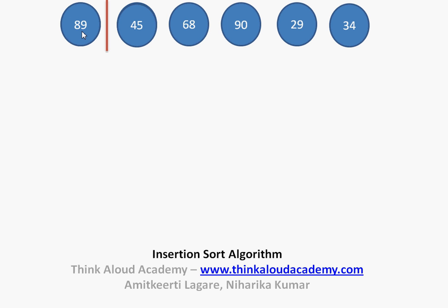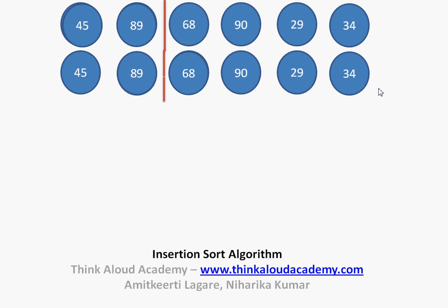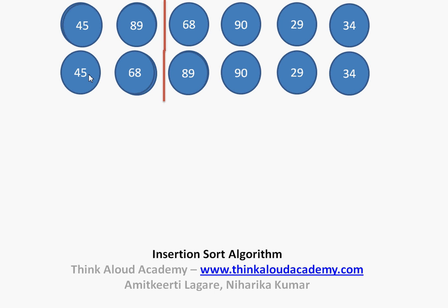Currently there is only one element, 89. So first we will save 45 and keep it aside, push 89 to the right, and then since there are no other elements left, 45 will go and sit in its position. So we have two elements which are already sorted — 45 and 89 — and the elements on the right hand side of the vertical bar are not sorted. Now let us pick the element immediately to the right of the bar, which is 68, and place it in its appropriate position. We make a copy of 68, move 89 to the right because it is greater than 68, and since 68 is greater than 45, we place 68 in its position and move the bar ahead.